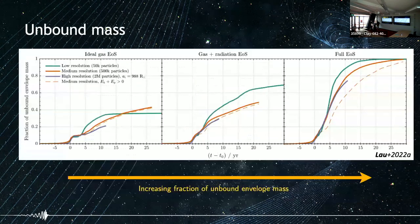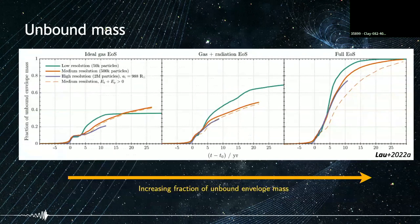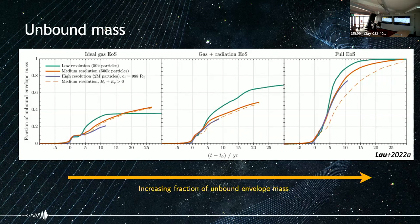Similarly, the fraction of unbound envelope mass increases as we include recombination energy, though we still don't eject the entire envelope.